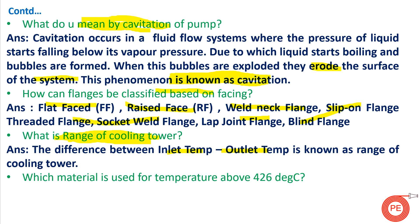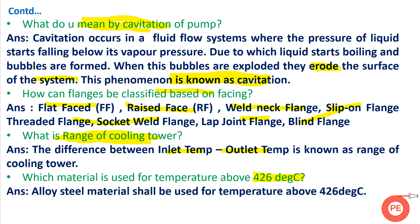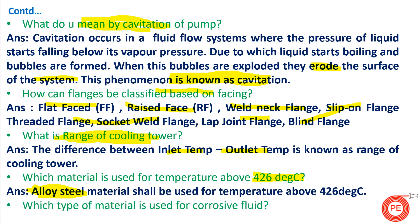Which material is used for temperatures above 426°C? For example, if you have a high pressure steam line at 426°C, which piping material do you use? We go for alloy steel material. Alloy steel should be used for such high temperature applications. Common alloy steel grades like P91 and P22 are used in steam piping, as these materials can withstand high temperature and high pressure.